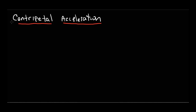Let's start by taking a look at this word 'centripetal.' You can see the root word 'center' in here. The second part, 'petal,' means center-seeking — going towards the center. This is very different from another word you might have heard: centrifugal. Centrifugal means center-fleeing, or away from the center.